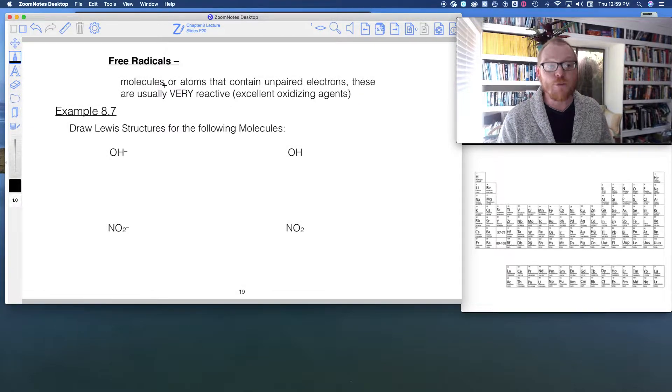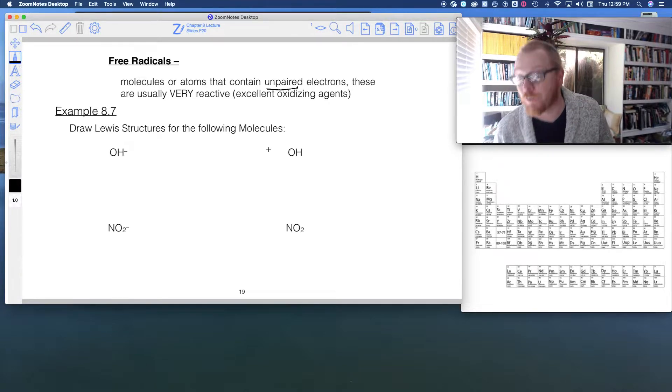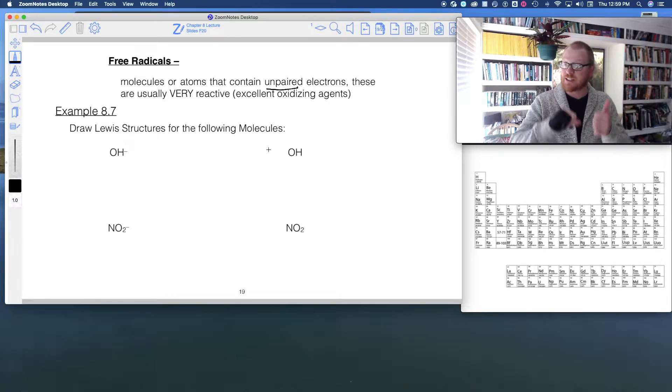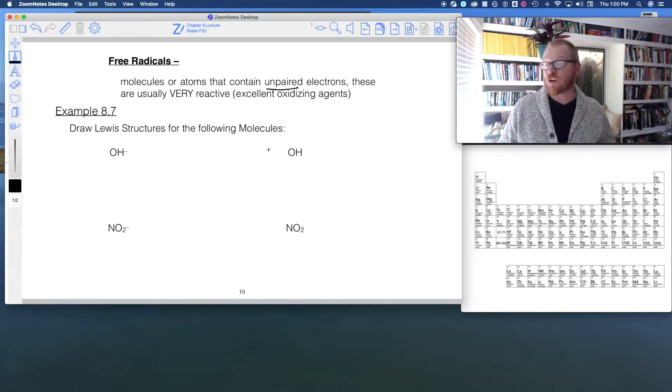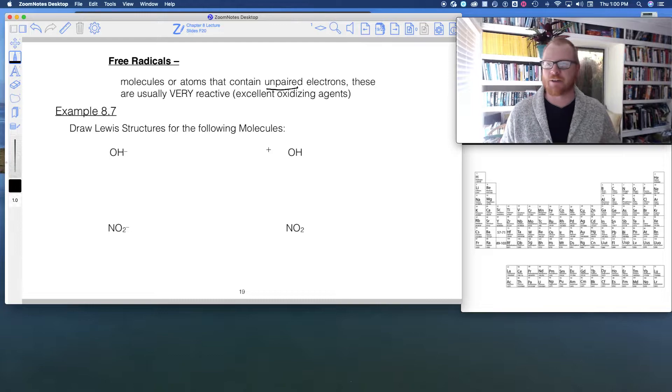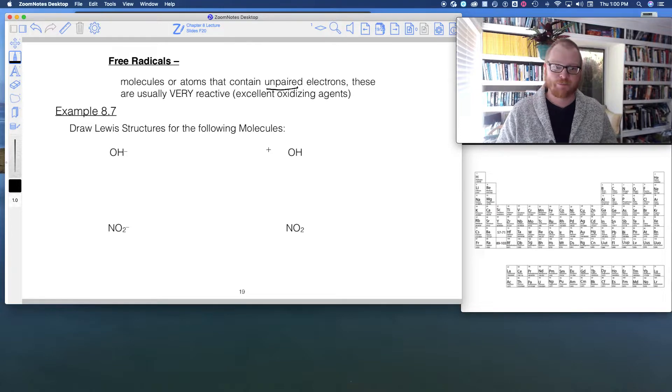So a free radical is a molecule or an atom that contains unpaired electrons. That means they're very reactive. Electrons like to exist paired up if they can. So free radicals, because they contain unpaired electrons, they're super reactive. They react very fast and they usually react very violently.